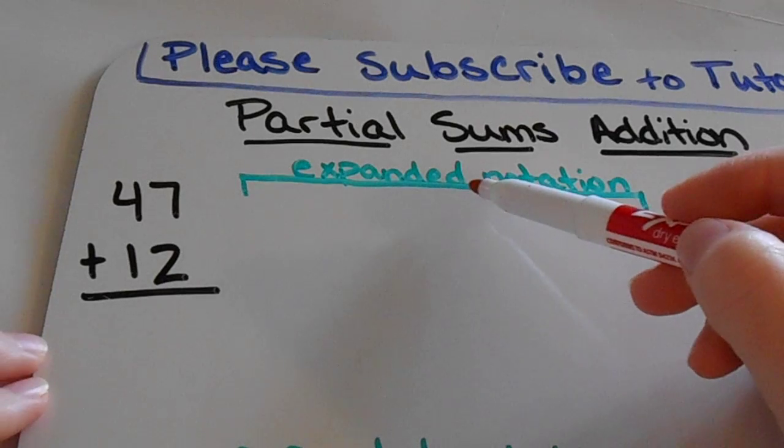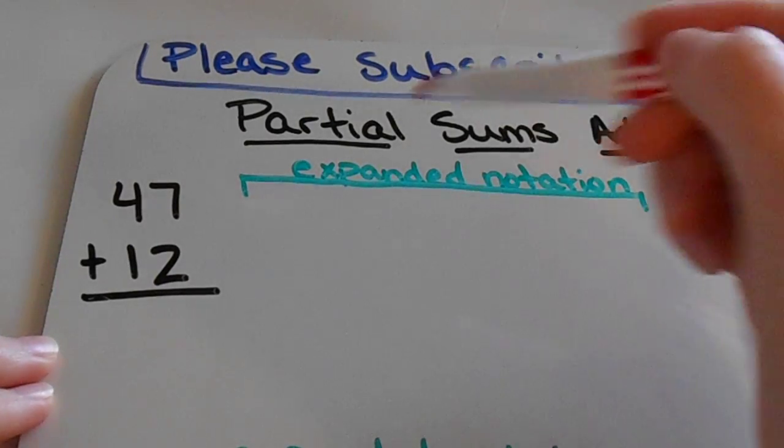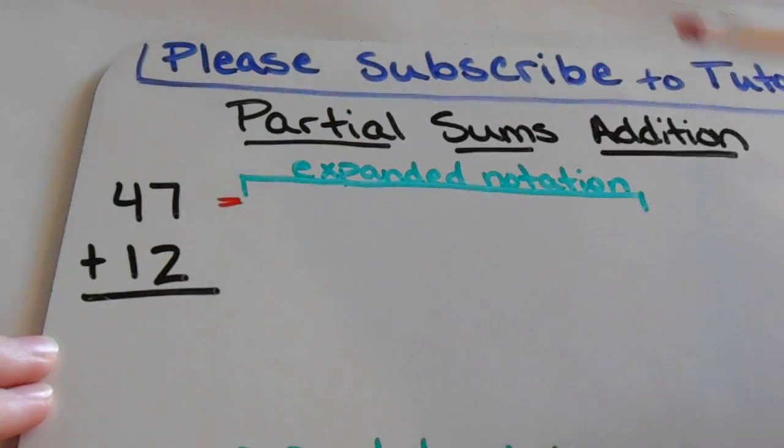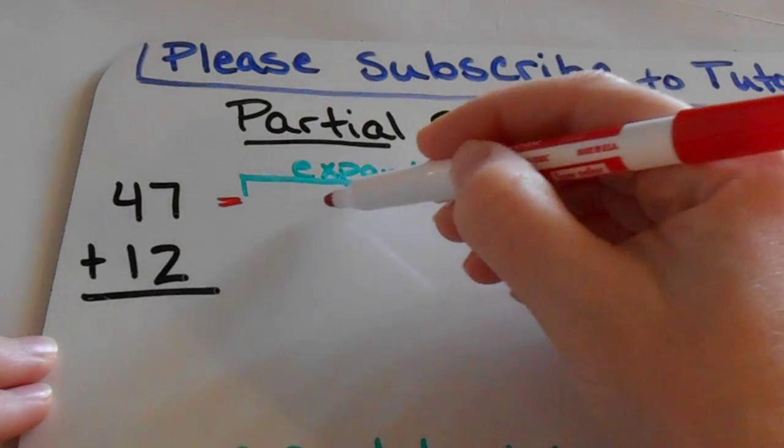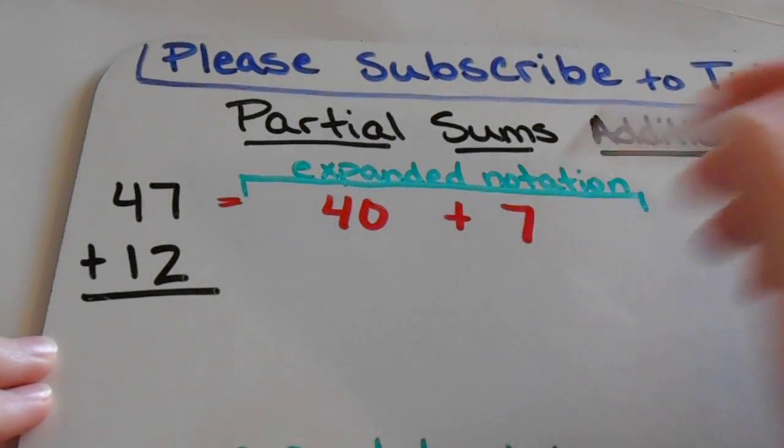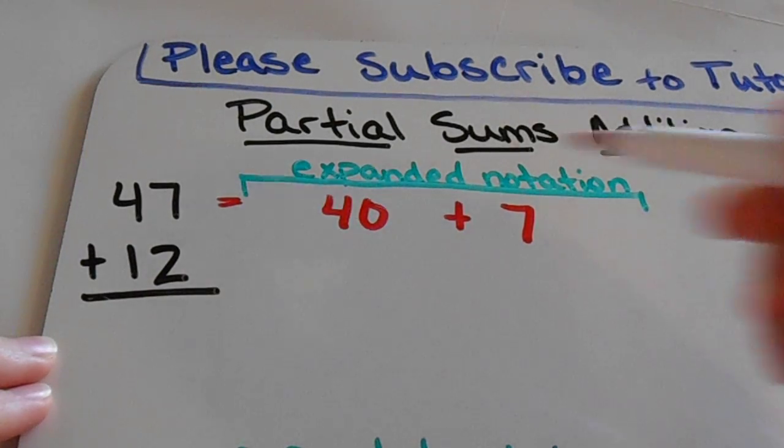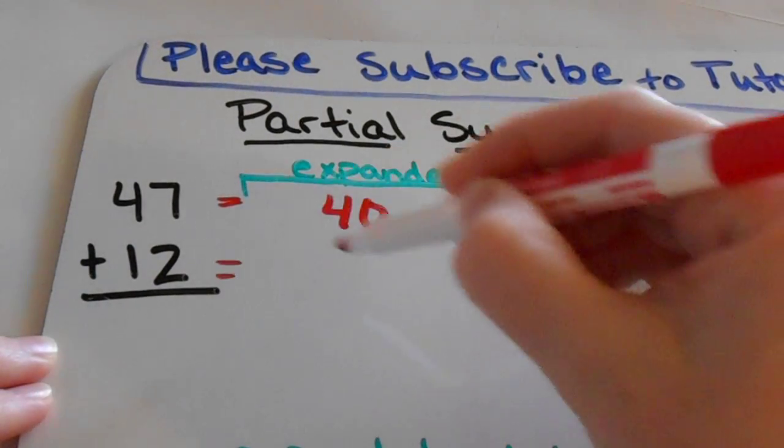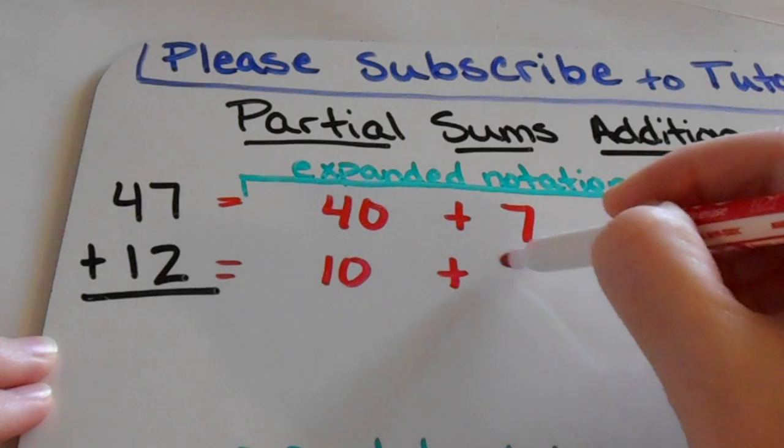Most students know how to do expanded notation, and that simply means you're taking this number and breaking it down into its parts. So you're breaking it down into its tens plus its ones. Now we're going to do the same thing for the 12. We're going to break that 12 down into its tens plus its ones.